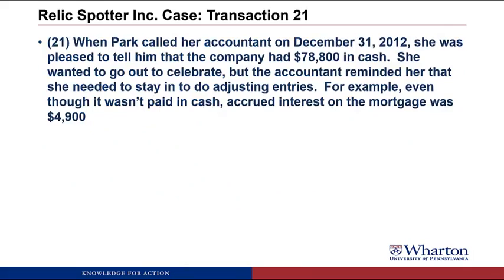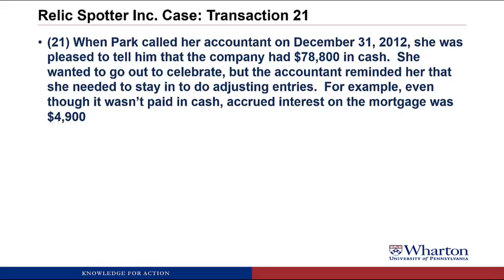Transaction 21. When Park called her accountant on December 31st, 2012, she was pleased to tell him that the company had $78,800 in cash. If we pull up the cash T-account, add up the debits and all the credits, you can see that the balance is $78,800. That's not going to change because all of these adjusting entries will not involve cash.